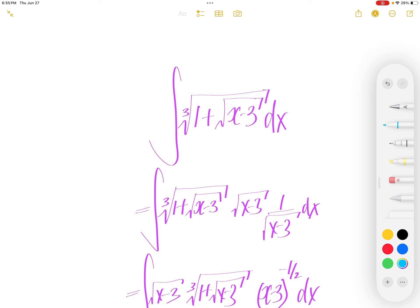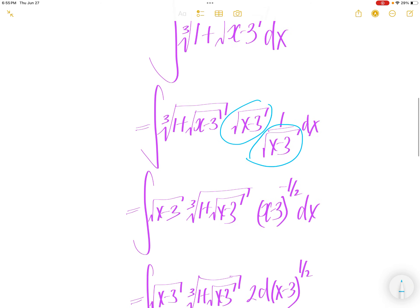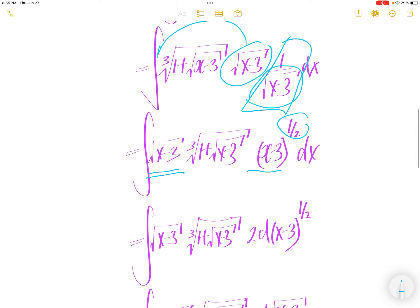First, we are going to multiply top and bottom with square root x minus 3. Move this in front. Write this as x minus 3 to the power of negative half. Push this into dx.